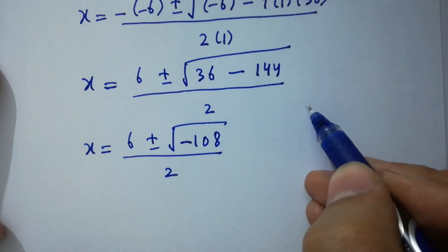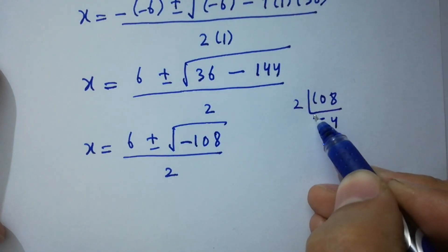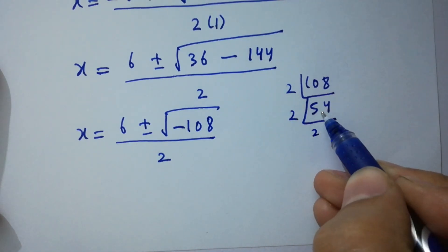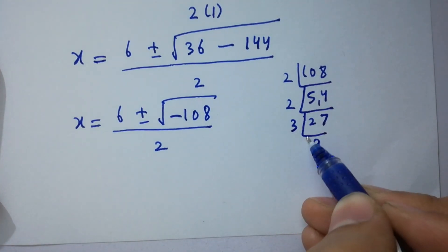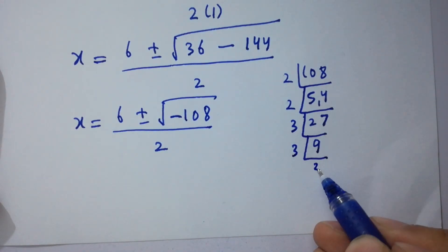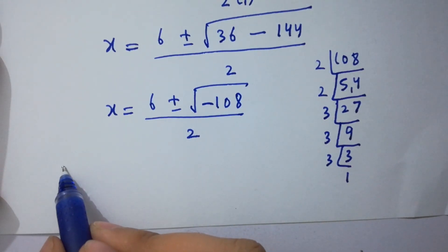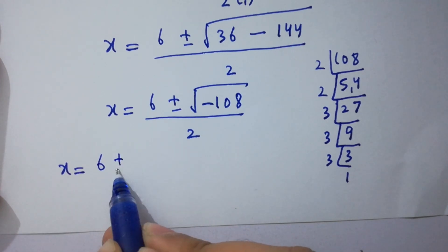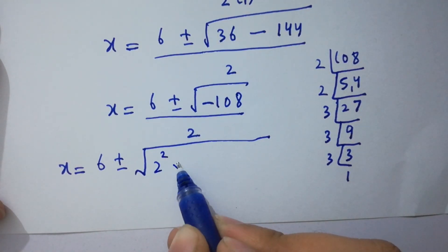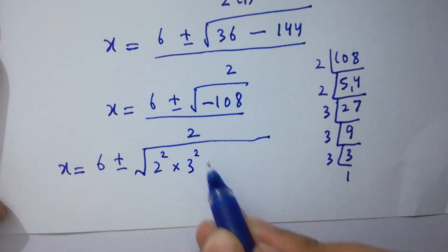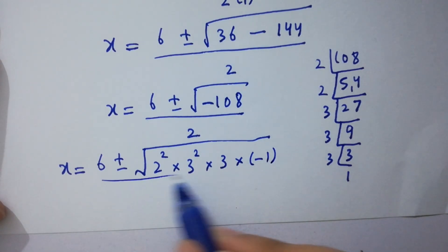Now factoring 108: 108 equals 2 squared times 3 squared times 3. So minus 108 equals 2 squared times 3 squared times 3 times minus 1. Therefore x equals 6 plus or minus square root of (2 squared times 3 squared times 3 times minus 1), over 2.